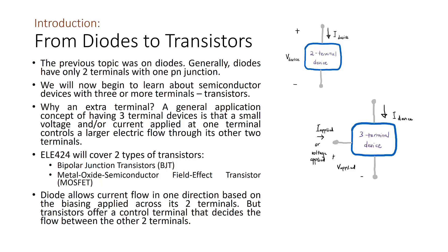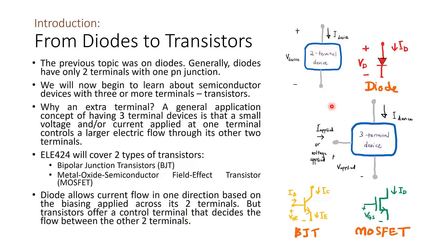To illustrate: a diode allows current flow in one direction based on the biasing applied across its 2 terminals, and once it turns on it locks at VD, allowing current ID to flow. Transistors offer a control terminal that decides the flow between the other 2 terminals. For a BJT, IB and VBE once it turns on will determine the flow of IC. For a MOSFET, applying gate-source voltage VGS controls the drain current ID.